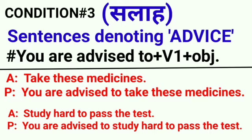The next condition — condition 3: sentences denoting advice — जब सलाह की बात हो। जिस imperative sentence से सलाह का पता चलता हो, उन cases में structure होगा: 'you are advised to', फिर verb का first form, फिर object। Example: active form में 'take these medicines' — passive: 'you are advised to take these medicines', मतलब आपको ये दवाइयां लेने की सलाह दी जाती है। दूसरा: 'study hard to pass the test' — passive: 'you are advised to study hard to pass the test'. सलाह की बात हो तो 'you are advised' लगाकर बनाएंगे, और verb का first form ही use होगा।